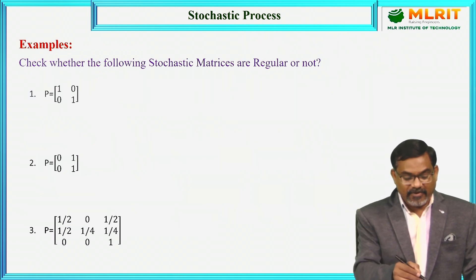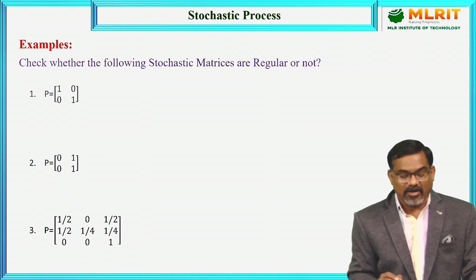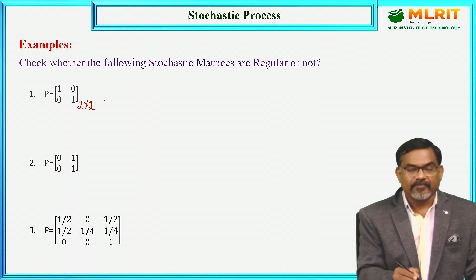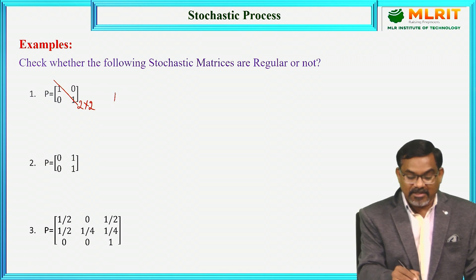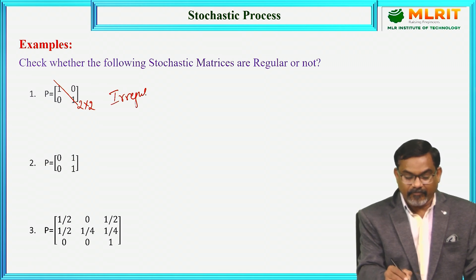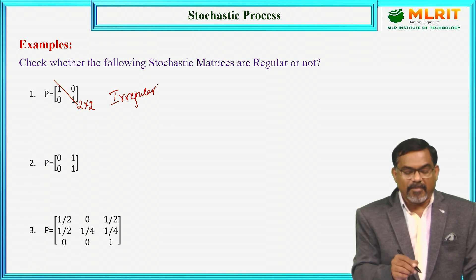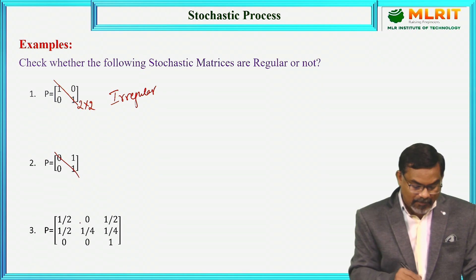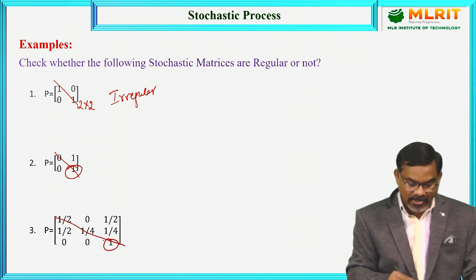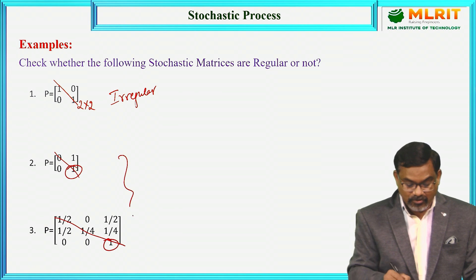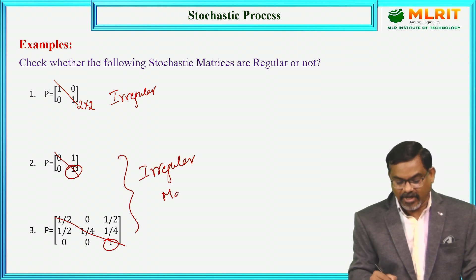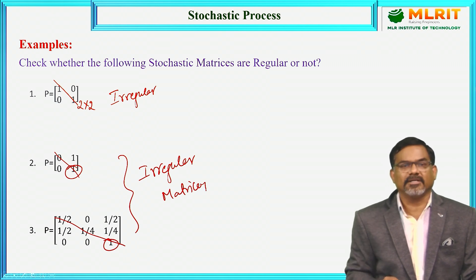Let us check whether the following matrices are regular or not. Here, the transition probability matrix P is given as a two-by-two matrix. Since one is present in the principal diagonal, it is an irregular matrix and hence the process is an irregular stochastic process. Similarly, in the second and third examples also, we have one in the principal diagonal, so these two are also irregular matrices. Hence, the process is an irregular stochastic process.